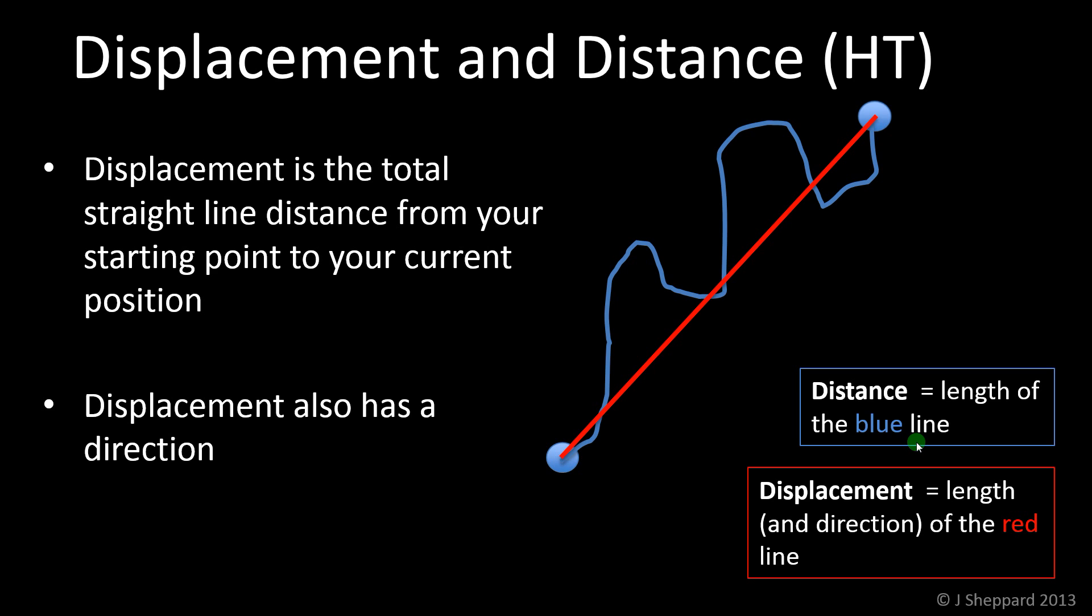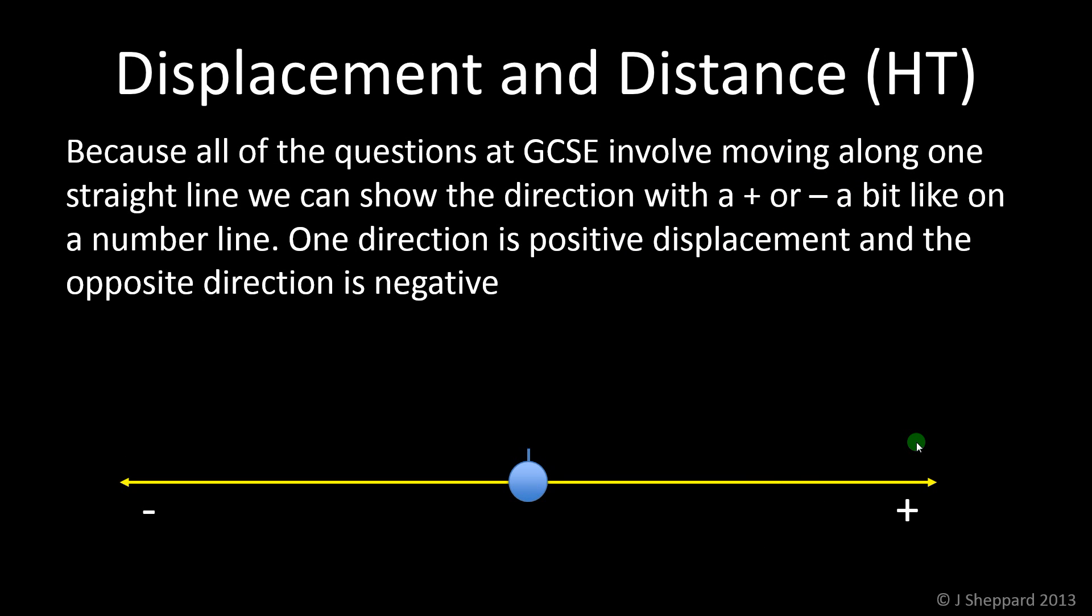And, displacement also has this idea of direction in there. So, it tells us which way we've gone as well as how far. Now, because in GCSE you only worry about moving in a straight line, then what we can say is that displacement in one direction is positive and displacement in the other direction is negative. It's a bit like a number line. So, here I've got my little blue blob again and I've said that to the right is positive and to the left is negative. It doesn't have to be that way around. But, whenever you do a question, with all of these quantities that have plus or minus that have a direction associated with them, as long as you stick with the same direction being positive. So, if you pick right is positive at the start of the question, you've got to stay with it. And you stick with the same direction as being negative. Then it will all work out.